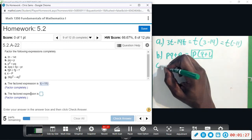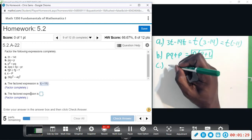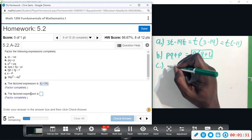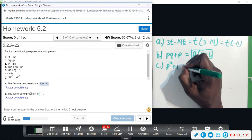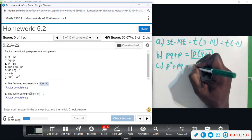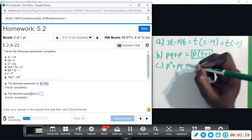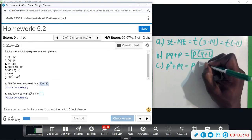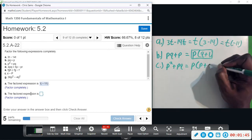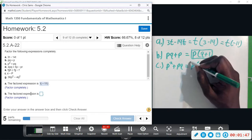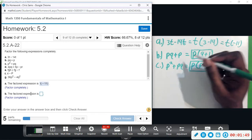Doing c, we have p squared plus pq. I'm going to pull out what they have in common. We can pull a p out of both. The first term will have one p left, the second term will just have the q, so we have a p and then in parentheses p plus q.